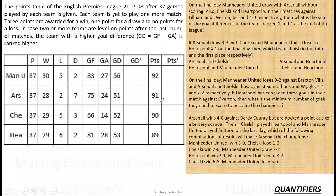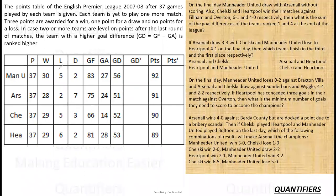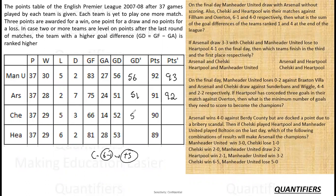On the final day, United draw with Arsenal without scoring, which means their goal difference stays the same. Arsenal's goal difference stays the same too. Their points are going to be 93 and 92 respectively. Chelsea win their match against Fulham 6-1, which means their goal difference improves by 5, so it becomes 57. Since they are winning, their points are 93.